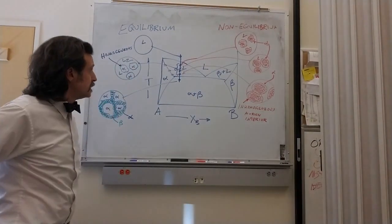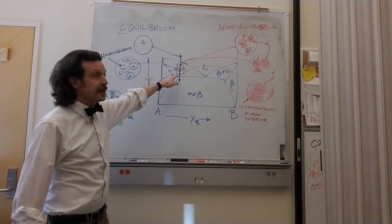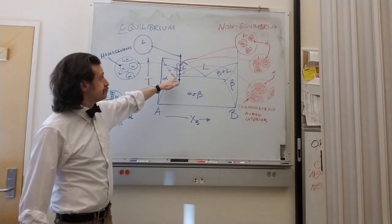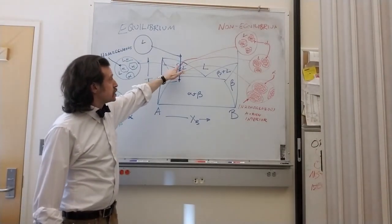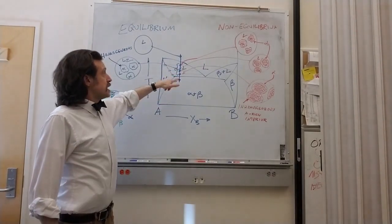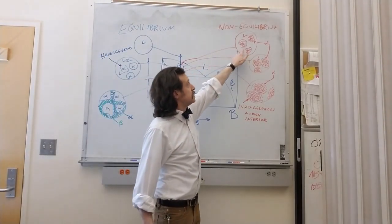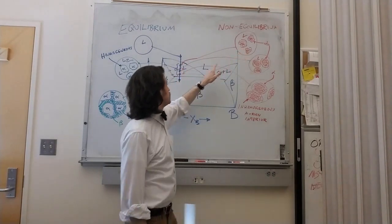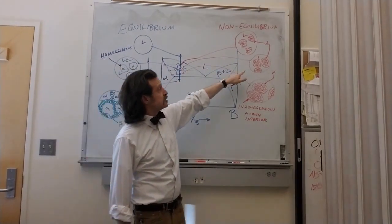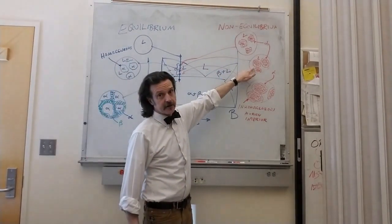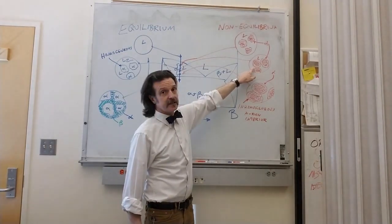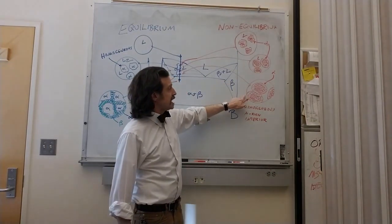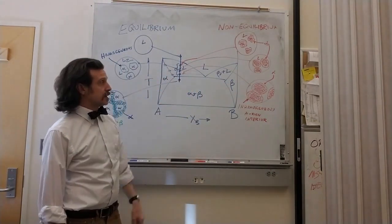For example, when we think about cooling through this two-phase region, our first solid is going to be very rich in A. As we cool down, the next layer on the outside is a little bit less A-rich and even less A-rich as we go lower.